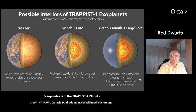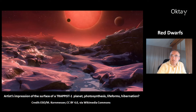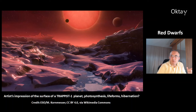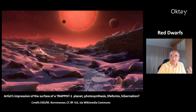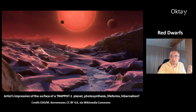This shows the possible interior structures of the TRAPPIST-1 exoplanets. On the left are planets without a core, where iron is mixed with other elements in the interior. Alternatively, they could be more like Earth with a rocky surface and an iron-rich core, or they could have a bigger iron core, a rocky surface, and a deep ocean on top. The key questions are: is photosynthesis possible on such a planet, and do lifeforms exist there?